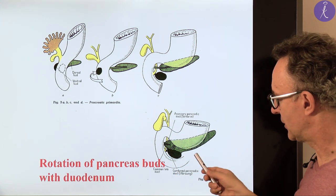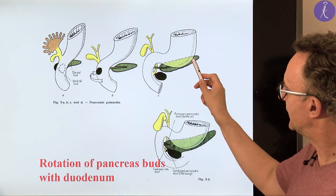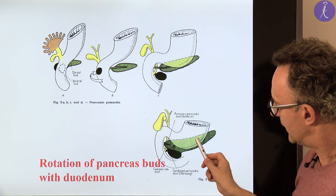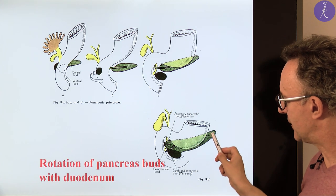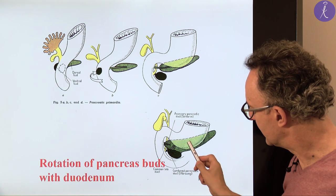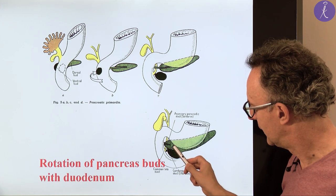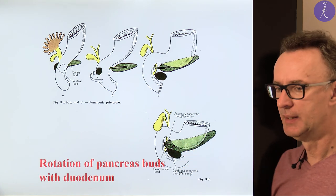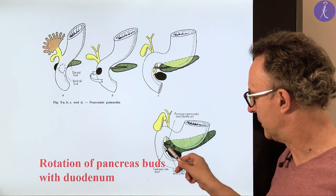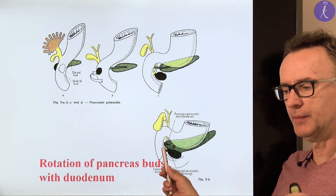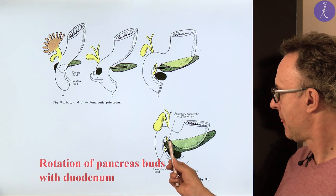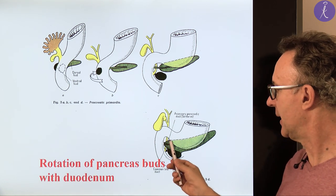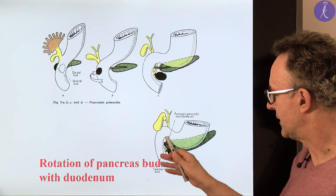With the fusion of the ventral and dorsal pancreatic buds, the situation changes. The dorsal bud originally has a distinct duct opening a few centimeters above on the descending duodenum. After union, the dorsal bud gives the tail, body, and upper part of the head of the pancreas, and its duct unites with the duct of the ventral bud to form the major pancreatic duct. This opens together with the common bile duct on the major duodenal papilla — papilla of Vater. The very proximal part of the dorsal duct remains as the accessory pancreatic duct, opening on the minor duodenal papilla.